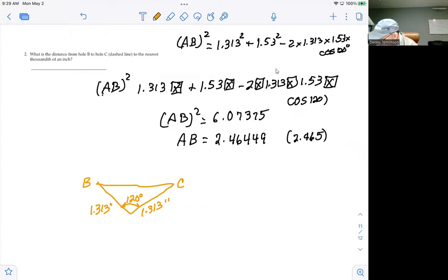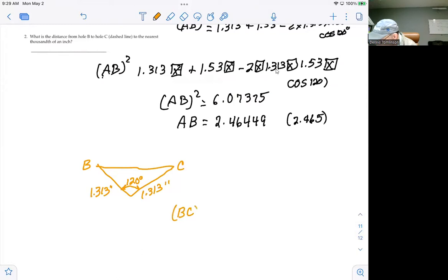The formula is the length of side BC squared is going to equal the sum of the squares of the other two sides, both of which are 1.313 plus another 1.313. And then minus two times 1.313 times another 1.313 times the cosine of 120 degrees.